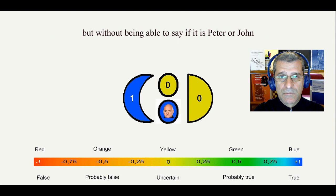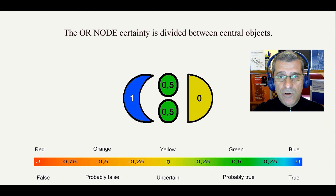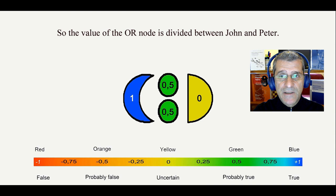And without knowing if the other is inside or not. At that time, we have sufficient reasons to think that there is a twin in our house. The OR node certainty is divided between central objects, so the value of the OR node is divided between John and Peter.